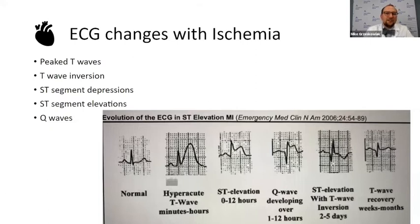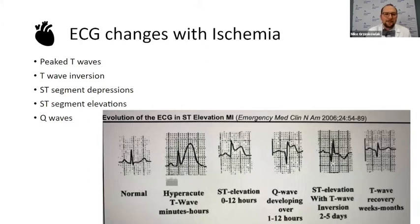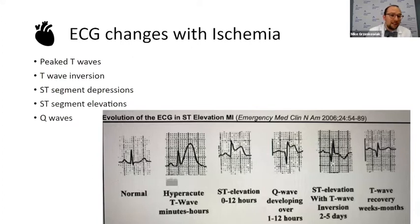Now let's jump into STEMIs and EKG findings. Whenever we have ischemia on an EKG, there are five different things you can see: one, peaked T-waves; two, T-wave inversions; three, ST depressions; four, ST elevations; and five, Q-waves.